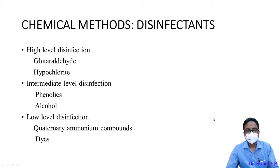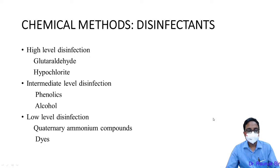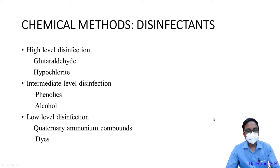Now we come to chemical methods. There are three levels of disinfectants: high-level disinfectants include glutaraldehyde and hypochlorite; intermediate-level disinfectants include phenolics and alcohol; and low-level disinfectants include quaternary ammonium compounds and acridine dyes.